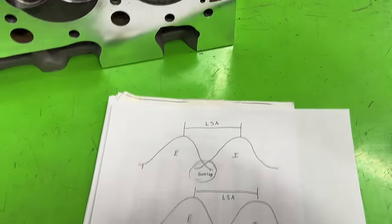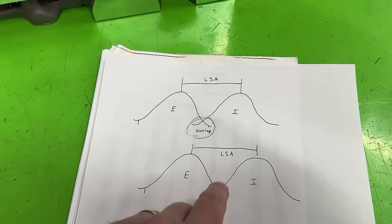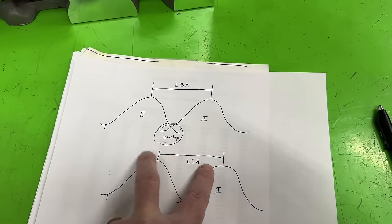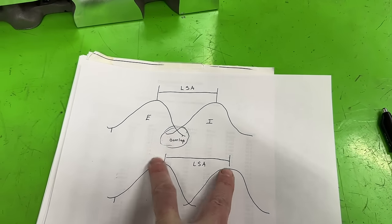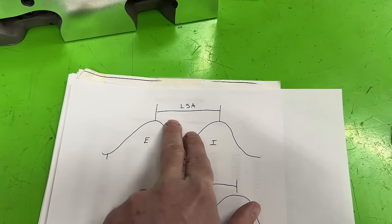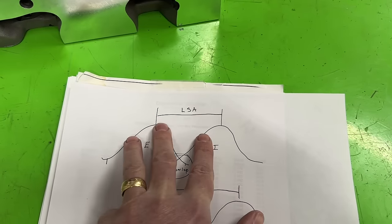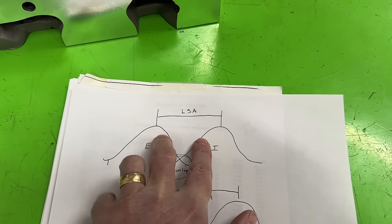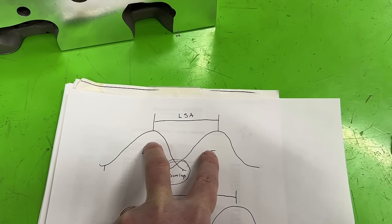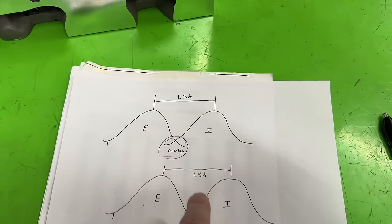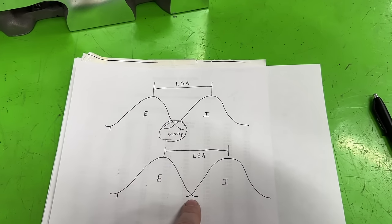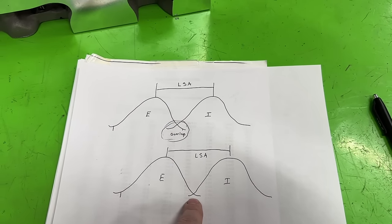So on a dedicated turbo motor, that overlap is reduced. How it's typically reduced is by spreading the lobe separations out. Tighter LSA numbers like 104 or 106 would increase overlap; a wider one like 112 reduces it. On a turbo motor, they usually widen the LSA to reduce overlap.